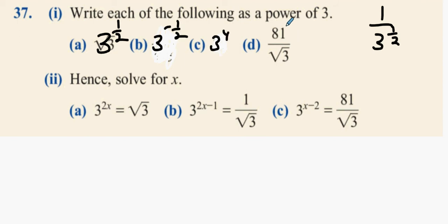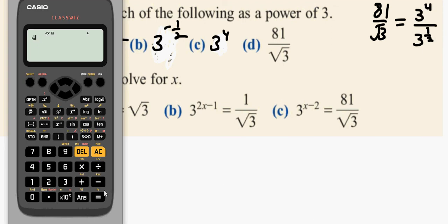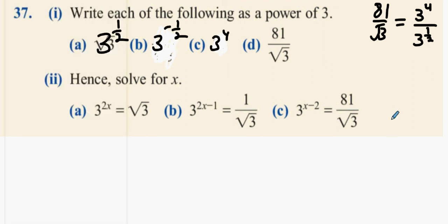Now what's 81 over root three? Three to power four divided by three to power of a half. And what's four take away a half? You can always use your calculator if you're not too happy with the fractions, but you will see that that is three to the power of seven over two.